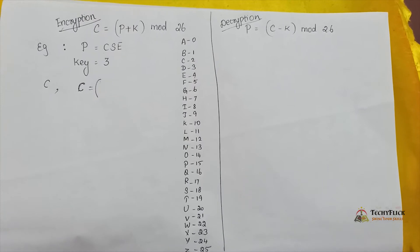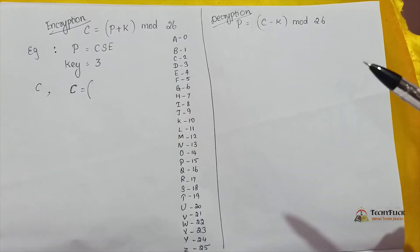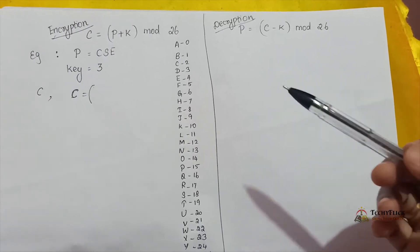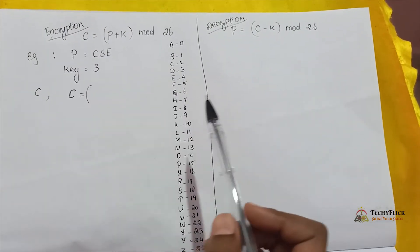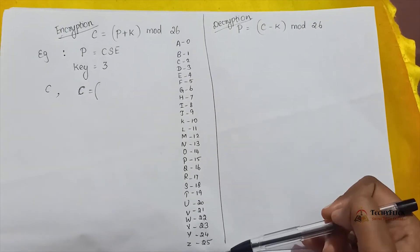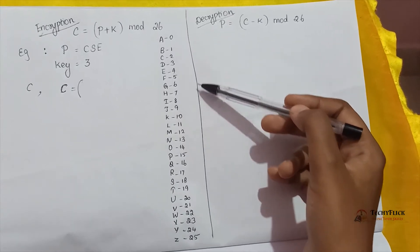Now let's look at a Caesar cipher example. Encryption formula: ciphertext is equal to P plus K mod 26. We can convert plain text to the ciphertext. First, write the alphabet on the back side of the note, all the numbers for each letter.